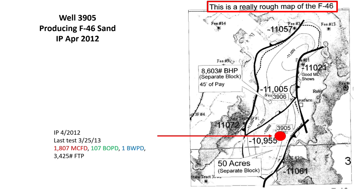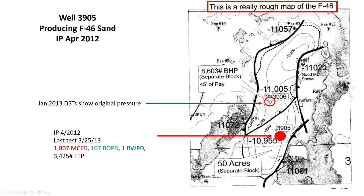The well was still producing very well with good pressure at that time. The well to the north is a part and well — it was drilled to a deeper reservoir, but it did have some DSTs in the subject reservoir. It shows that pressure had not been depleted by the well to the south, so this would indicate that this fault is sealing between the two wells. Our subject well should be only draining about 50 acres of reserves.